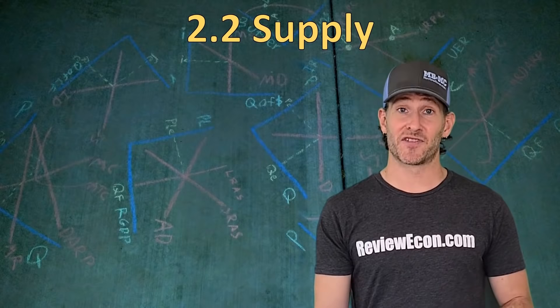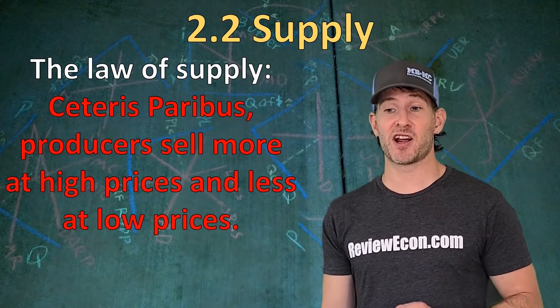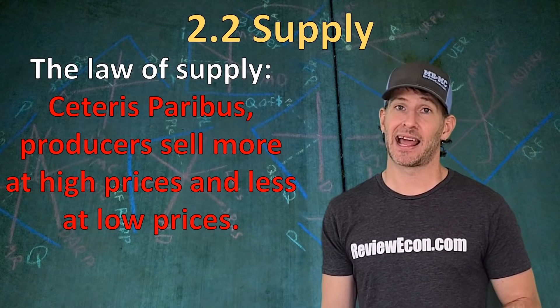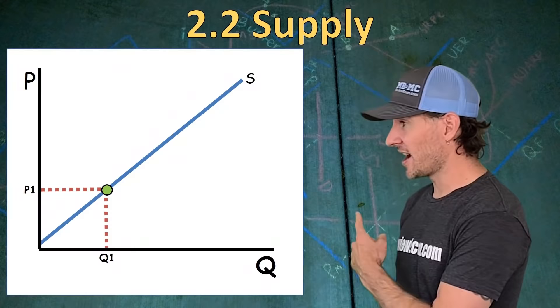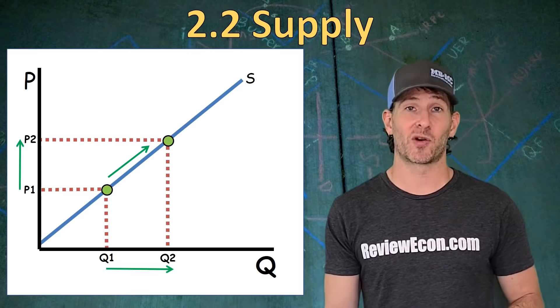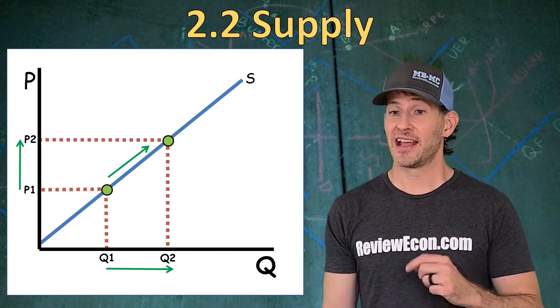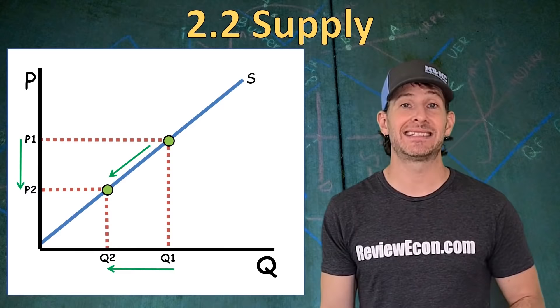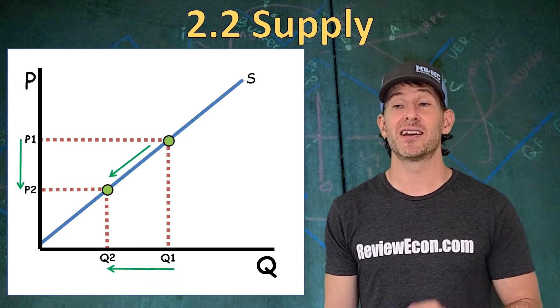Now let's talk about supply curves — they are the opposite of demand curves. Before there was an inverse relationship between price and quantity; with supply, there's a direct relationship. Ceteris paribus, producers produce and sell more at high prices and less at low prices — this is the law of supply. It gives us an upward sloping supply curve. When prices go up, we see an increase in quantity supplied, shown as movement up the curve. If price goes down, it shows movement down the curve, giving us a decrease in quantity supplied.